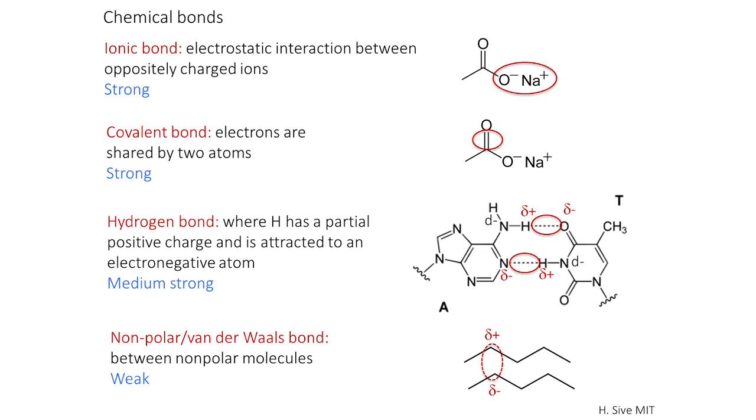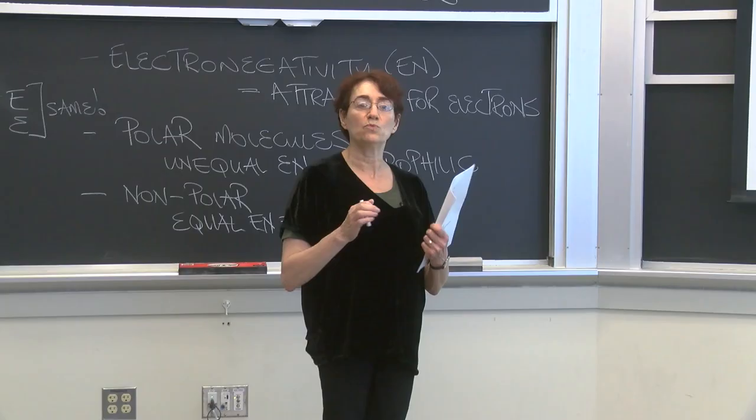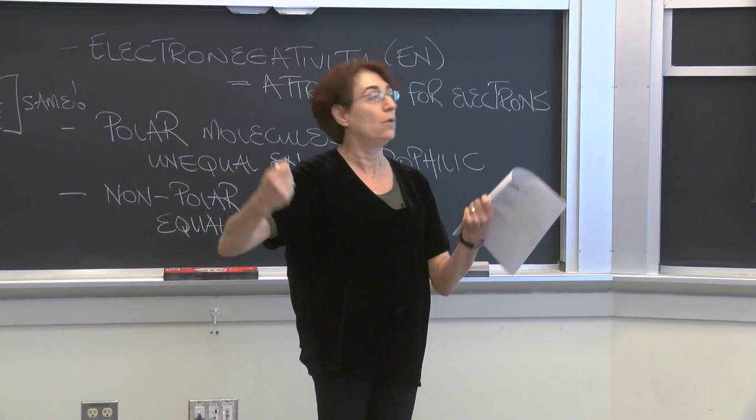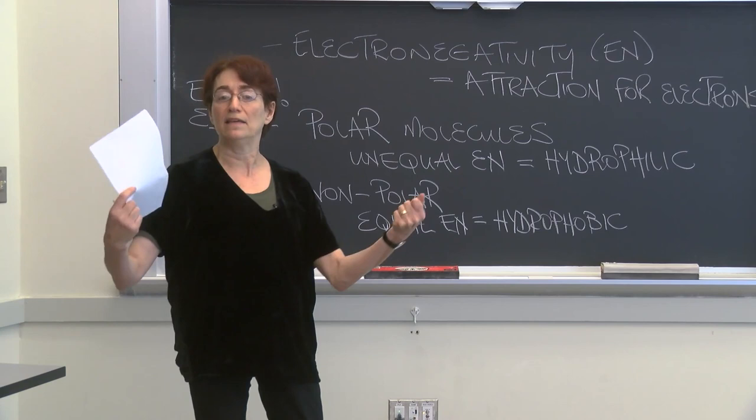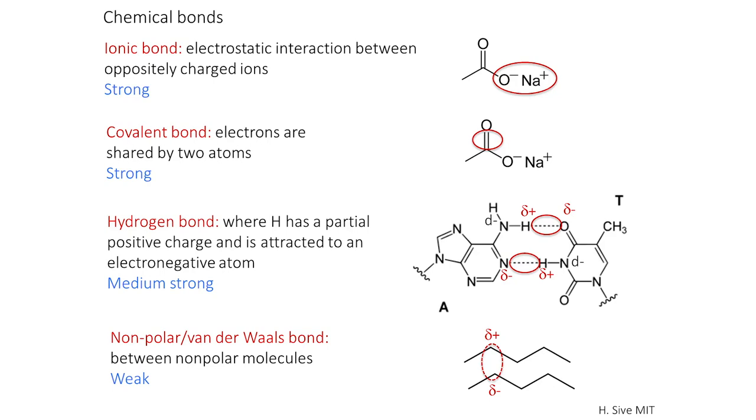In a covalent bond, the electrons are shared by two atoms. And this contrasts with the ionic bond, where electrons move to one part of the molecule or to another part of the molecule or to a completely different molecule, and the molecule is held together with the electrons split completely away from one of the atoms. In a covalent bond, in contrast, the electrons are shared by two atoms.